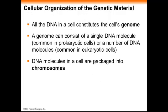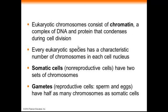In order to understand cell division, we need to understand how the genetic material is organized. All the DNA in a cell constitutes the cell's genome, and depending on the kind of cell, a genome can be one DNA molecule or a bunch of different DNA molecules. The DNA molecules themselves are packaged into chromosomes. Eukaryotic chromosomes consist of chromatin, which is basically a complex of DNA wrapped around proteins.